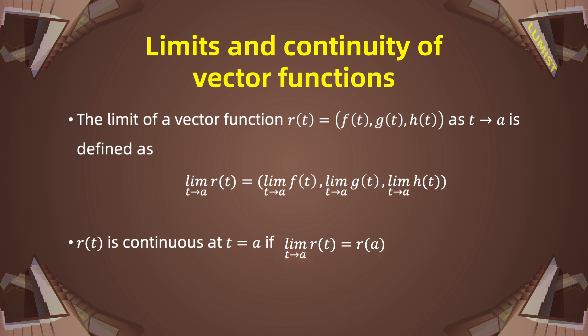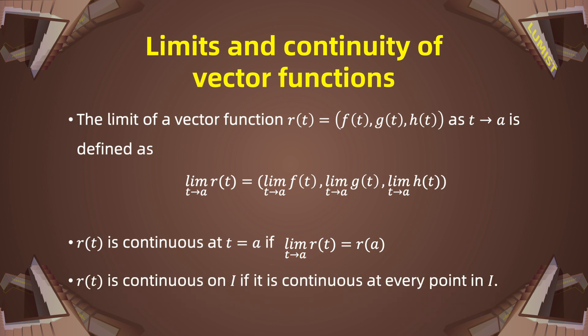On the other hand, t is a real number. It is the variable of this limit, and it is approaching the real number A. Finally, we can say that R of t is continuous on the interval I if it is continuous at every point t in I.